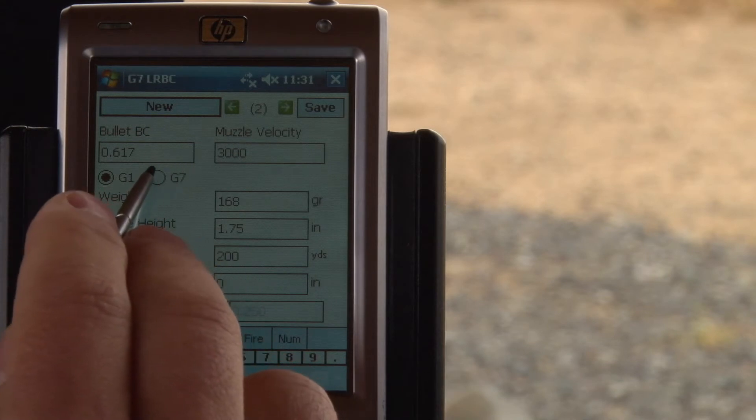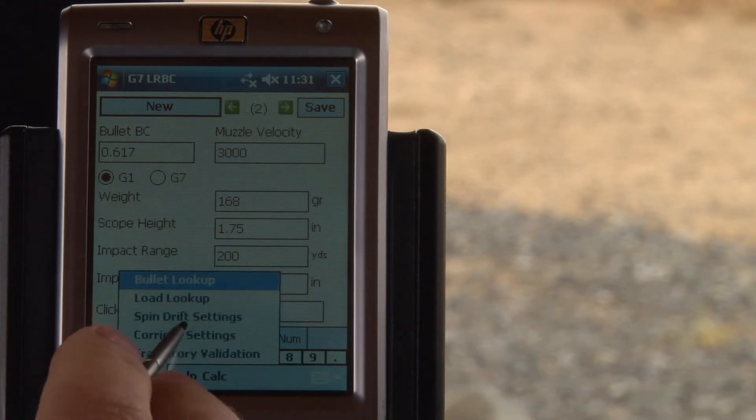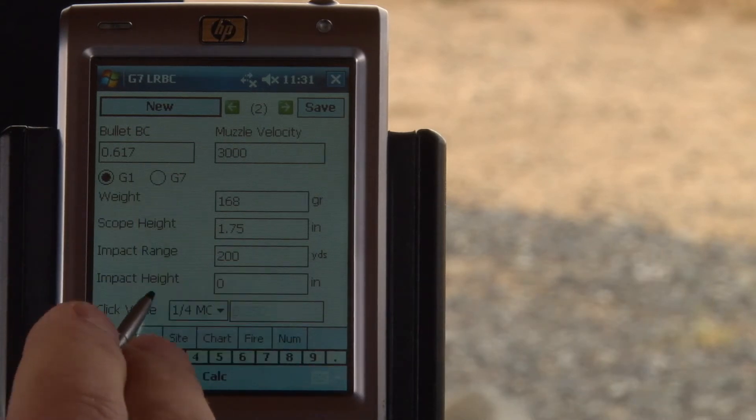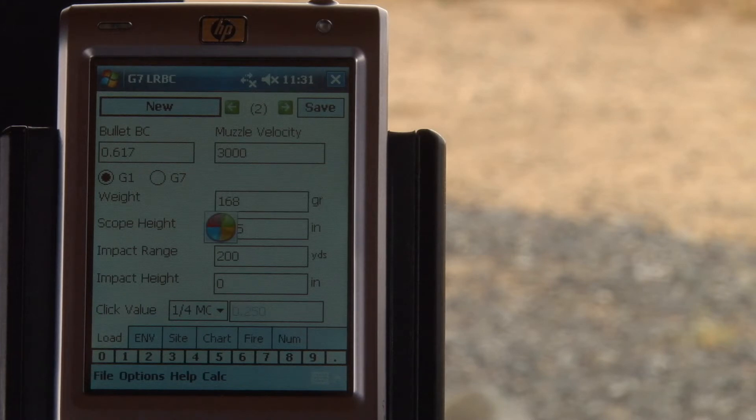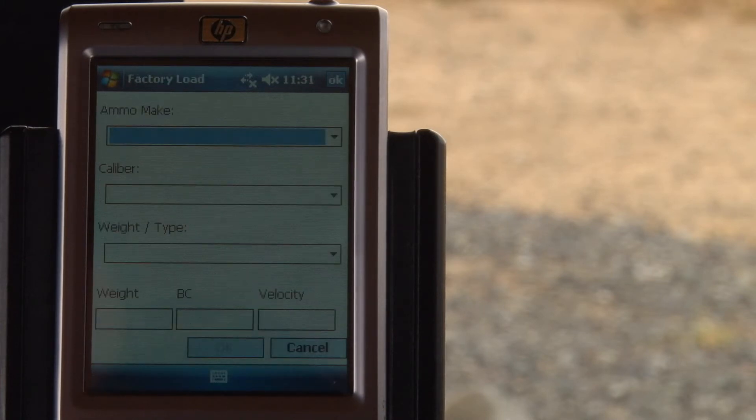If we'd like to know what our G7 is, that's available. We also have a load lookup that you can pick from a database of standard loads that are offered from manufacturers like Black Hills or Hornaday or Remington.